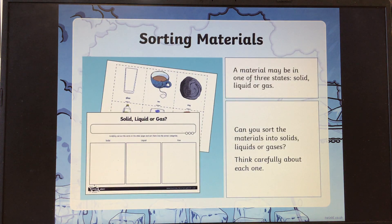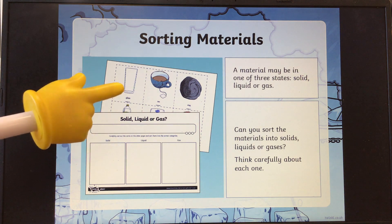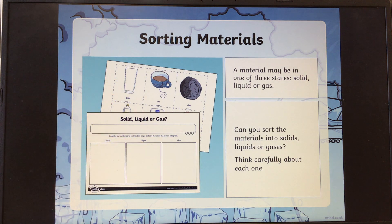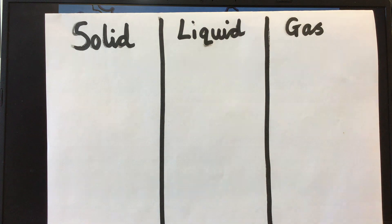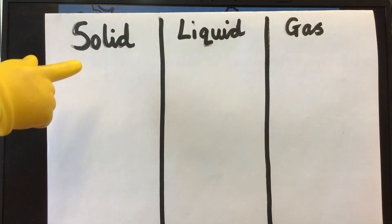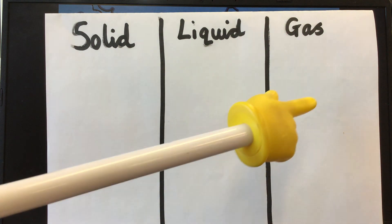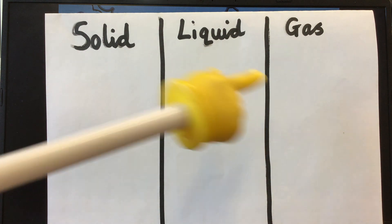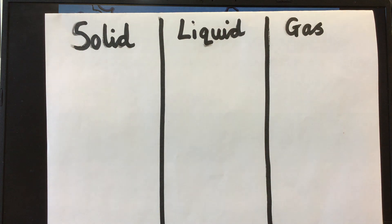So a material may be in one of three states: solid, liquid or a gas. Your first task is to sort these pictures into solid, liquid and gas. You need to pop them into there. Now if you haven't been able to print them off, you could do something like what I've done. I've just done my little chart and I was going to write in here any solids, any liquids and gases so that I don't have to print it off — I could just write the words in there. Now's your time to pause the video and work through that first task, please.